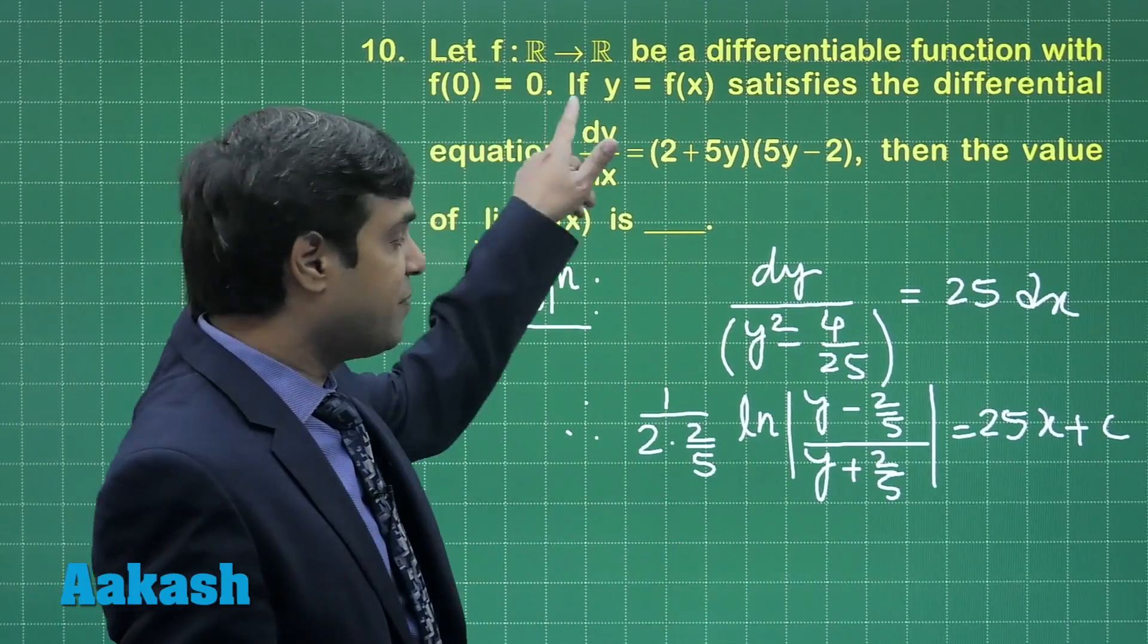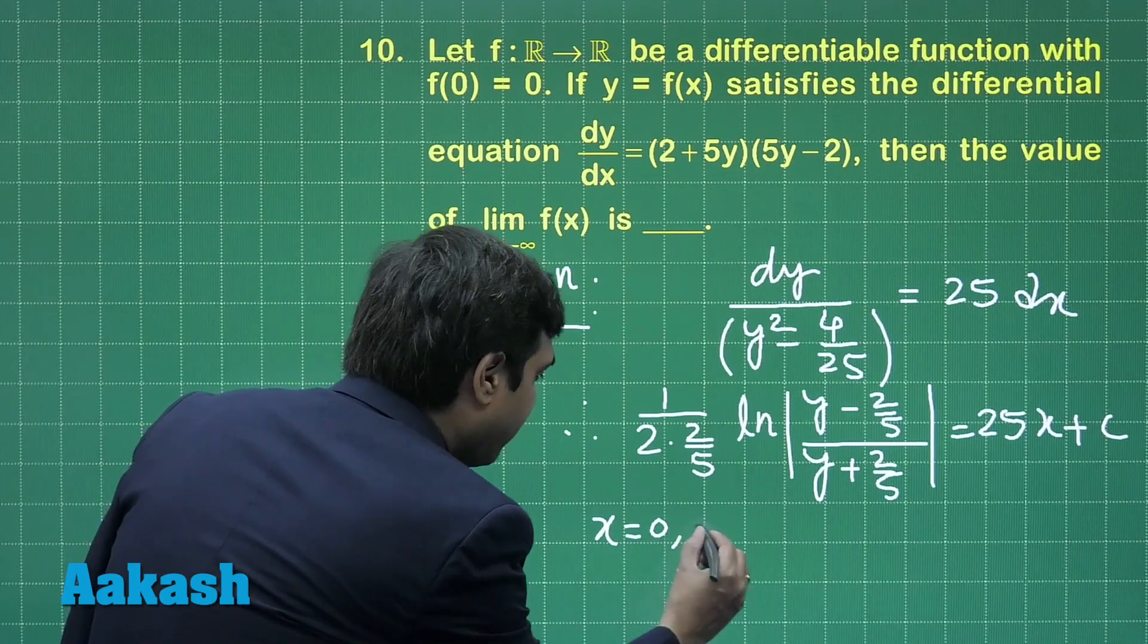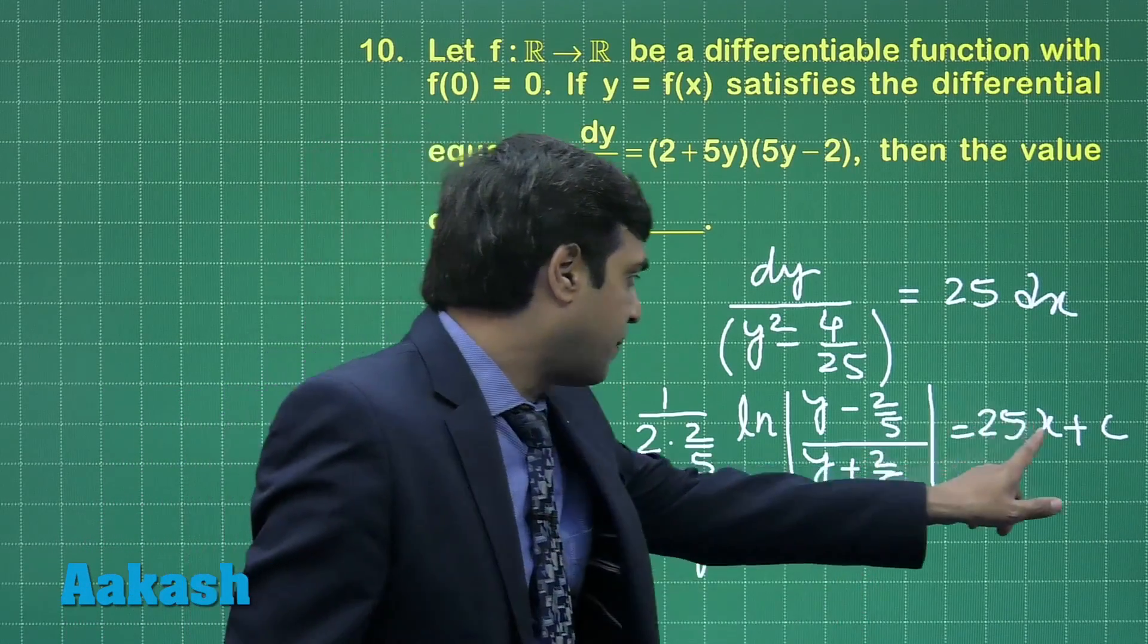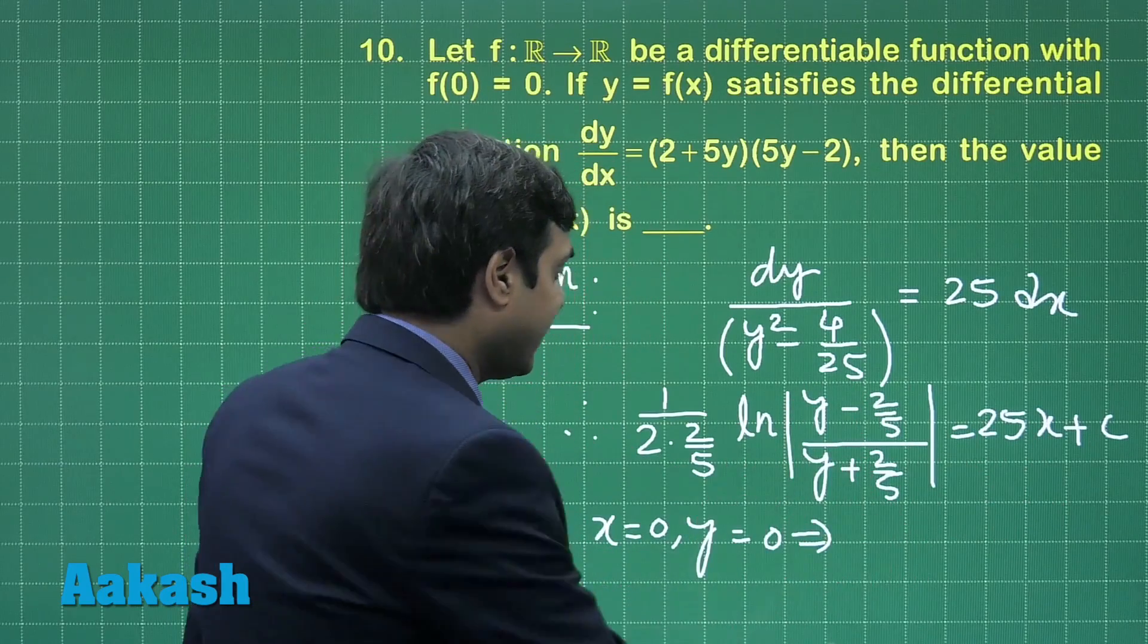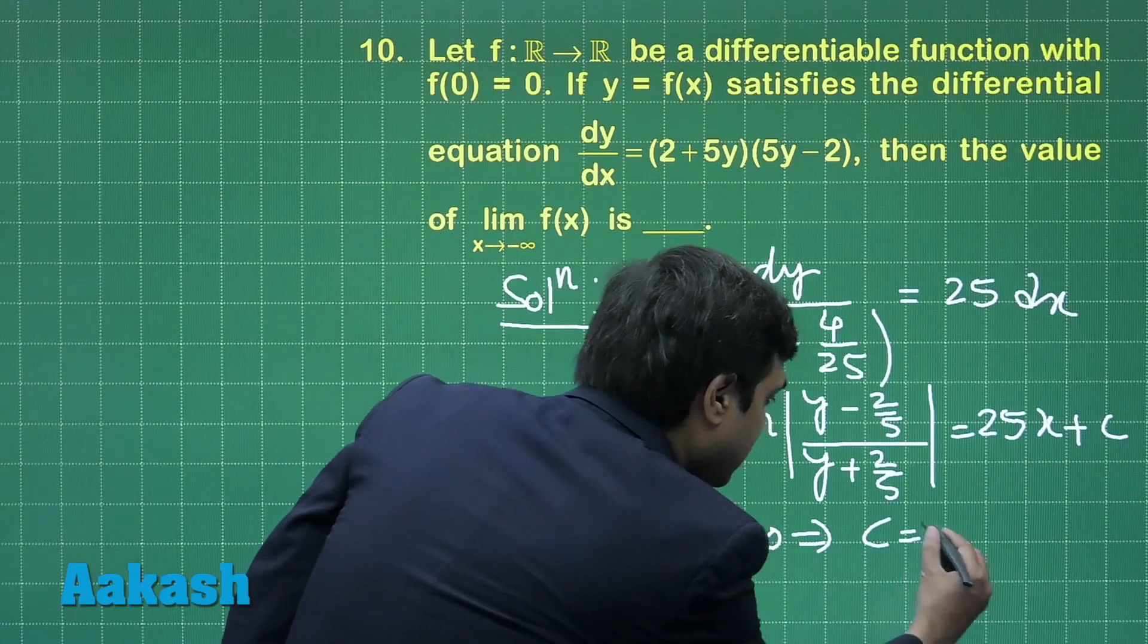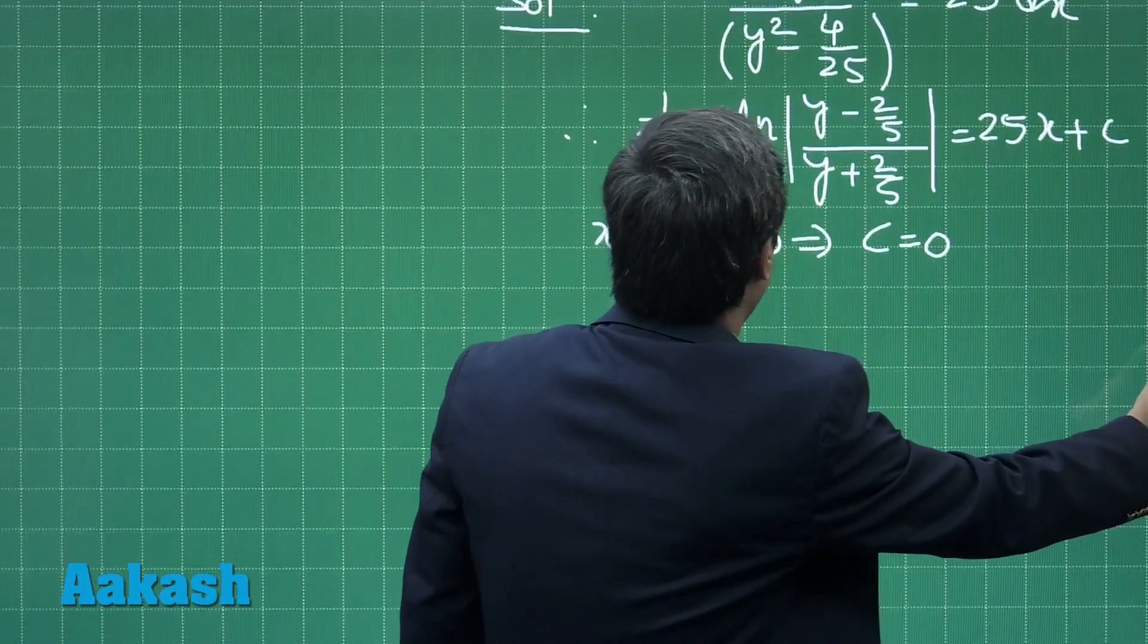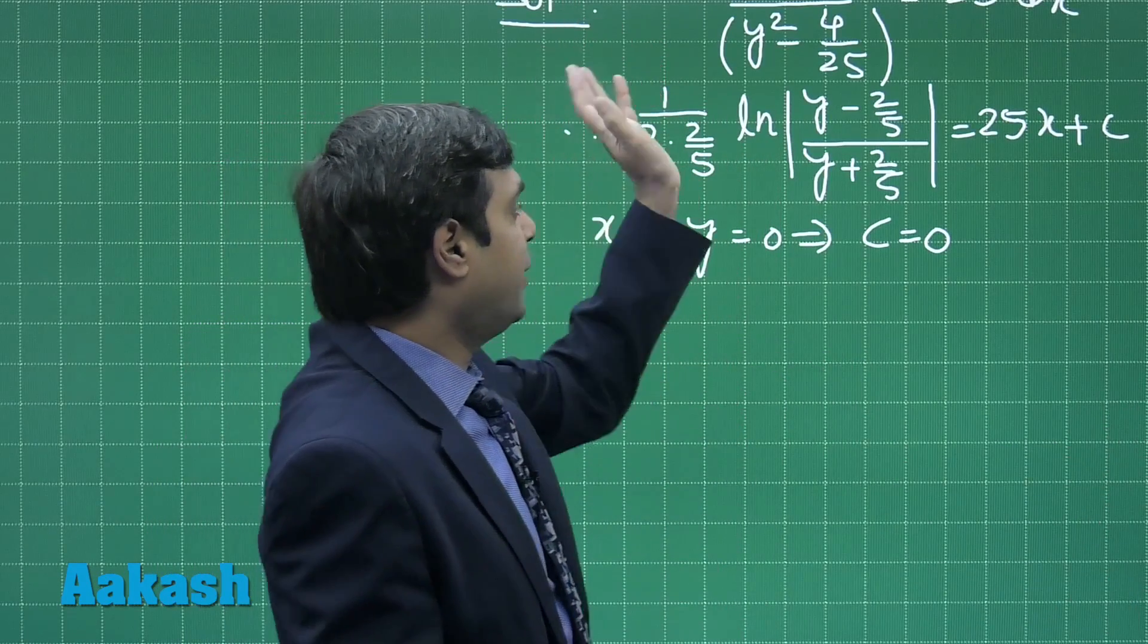Integrating we have 1 upon 2a, that is 2/5 log mod of (y - 2/5) divided by (y + 2/5) equals 25x plus constant of integration. It is given that f(0) is 0, meaning when x is 0 then y is also 0, giving us c equals 0.